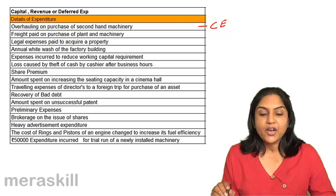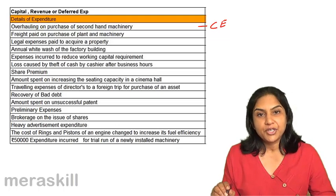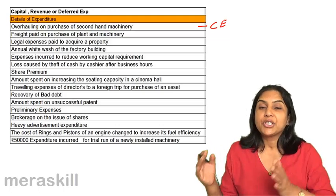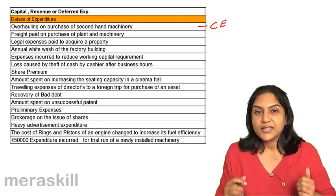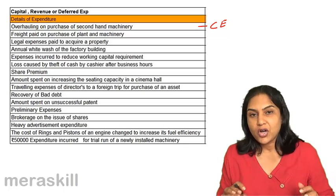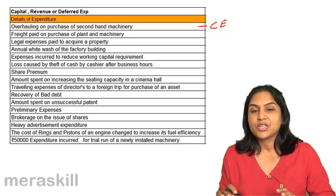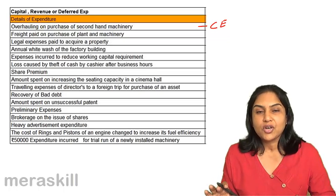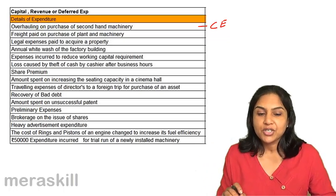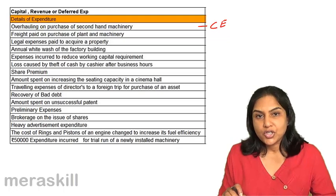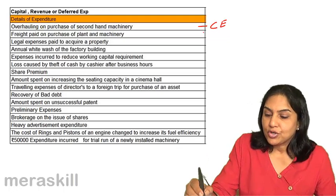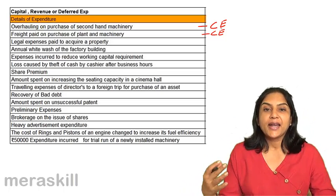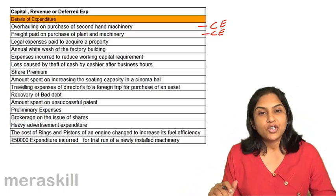Freight paid on purchase of plant and machinery. All costs incurred till the machinery is put to use — freight costs, installation costs, loading, unloading, fixing, everything — till the machine gets functional would be added to the cost of the asset. So this is also a capital expenditure, added to the cost of the asset.